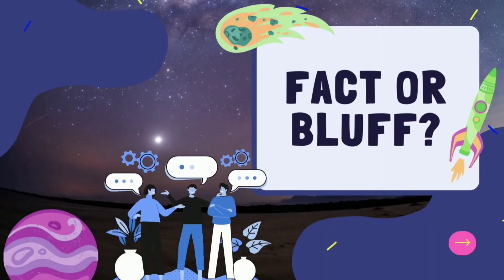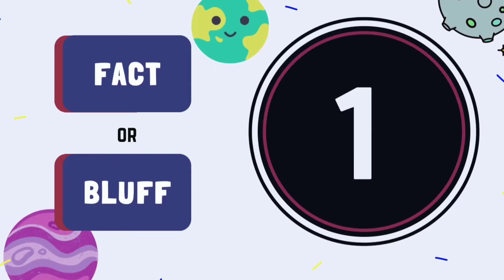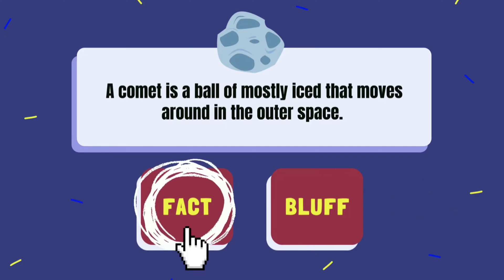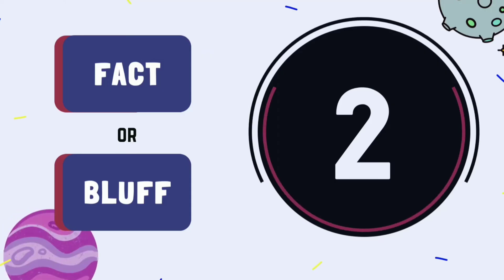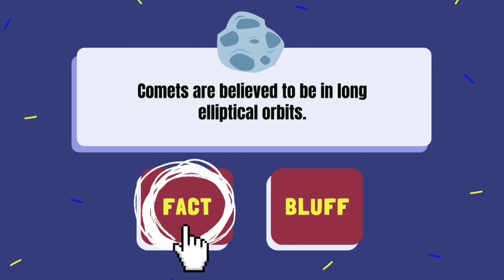Choose fact if the statement is true and bluff if it is false. Number 1: A comet is a ball of mostly ice that moves around in outer space. Fact or bluff? The answer is fact — the statement is true. Number 2: Comets are believed to be in long elliptical orbits. Fact or bluff? The answer is fact — the statement is true.